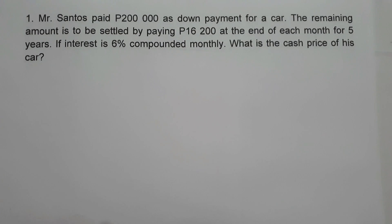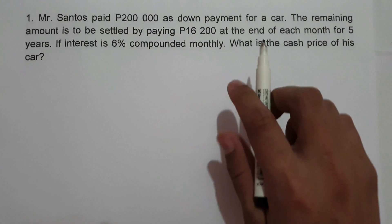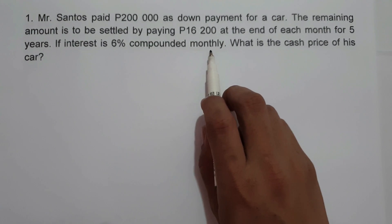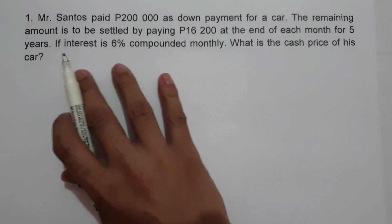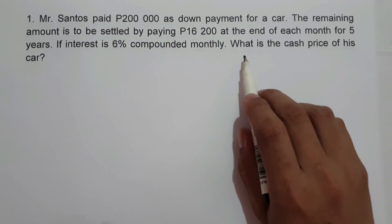On the first example, Mr. Santos paid P200,000 as down payment for a car. The remaining amount is to be settled by paying P16,200 at the end of each month for 5 years. If the interest is 6% compounded monthly, what is the cash price of his car? Since the payment is made at the end of each month and the payment interval is the same as the interest period compounded monthly, this is an example of simple ordinary annuity.